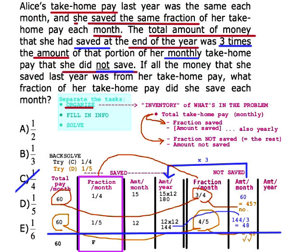You can also do a hybrid approach: pick a smart number for income (like 60) while still keeping an algebraic variable F. Then the saved amount is 60F and the not-saved amount is 60(1 minus F). Dividing the yearly saved by 3 gives 240F, and setting that equal to 60(1 minus F) should also give you F equals 1/5. There are many ways you can do it — with a smart number and algebra for F, with a smart number and back-solving, or with a totally algebraic approach.